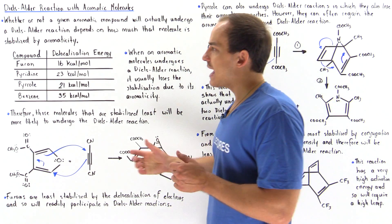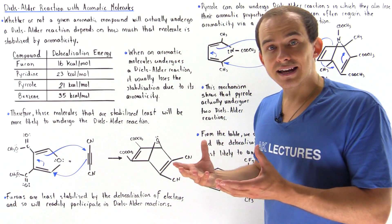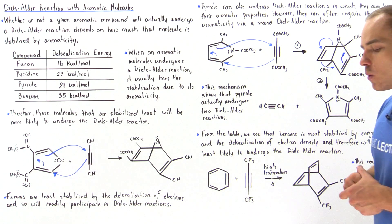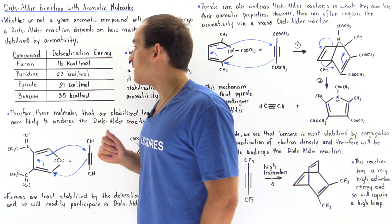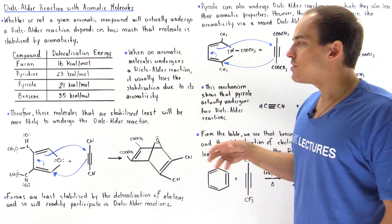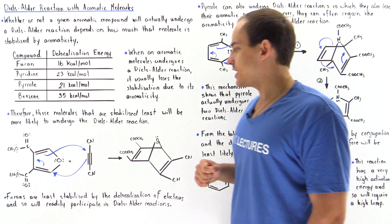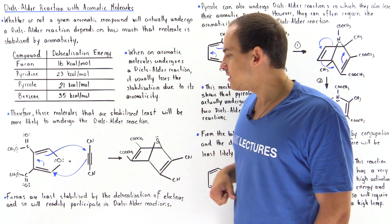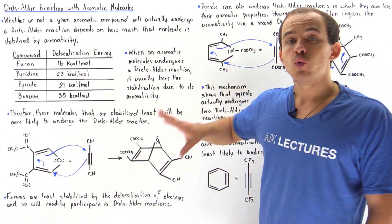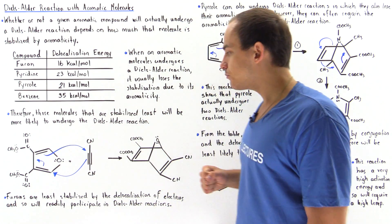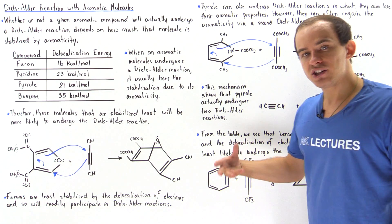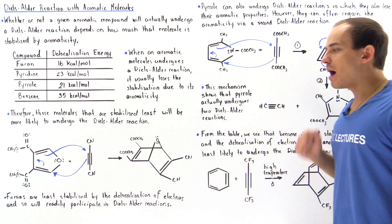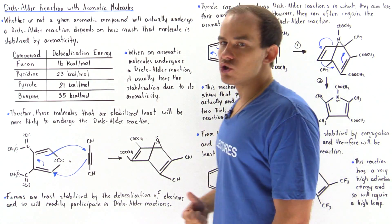Let's begin by examining furan. Furan is aromatic and its aromaticity lowers its energy by 16 kcal/mol. Because it has such a small value for its delocalization energy, furan does in fact readily undergo the Diels-Alder reaction. This furan molecule reacts with an alkene to produce a product in which we no longer have aromatic properties. Furans are least stabilized by electron delocalization and so will readily participate in the Diels-Alder reaction.